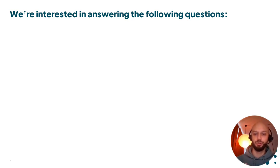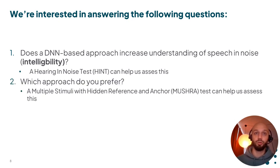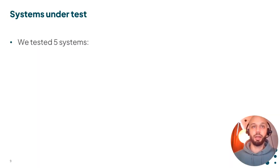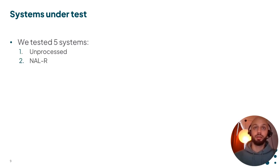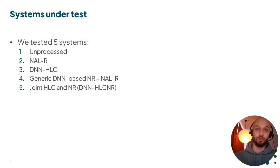In order to test the validity of our proposed approach, we would like to measure two things: first, whether a DNN-based approach can outperform a conventional approach in terms of intelligibility, using a hearing in noise test; and second, whether the DNN-based approach can outperform a conventional approach in terms of preference, using a MUSHRA-style test. We tested 13 elderly hearing impaired individuals with mild to moderate-severe hearing losses. For all individuals, we tested five different systems: the unprocessed signal, the signal processed by NAL-R, the DNN-based HLC with no noise reduction, a generic DNN-based noise reduction followed by NAL-R, and the joint DNN-HLC and noise reduction strategy.